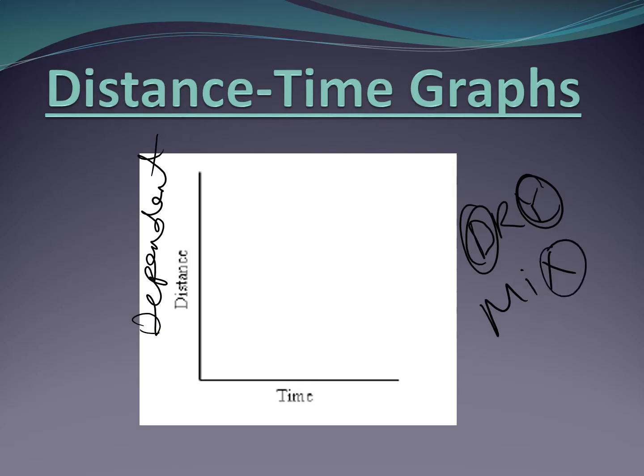On the x-axis, this is our independent variable, and this is the manipulated variable. How much time do we want to plot? And how far are we going to get there? Based on how much time we have, that's how much distance will be covered.